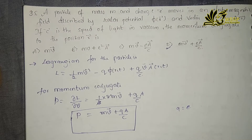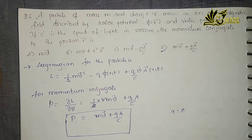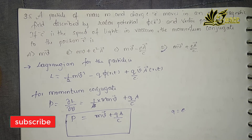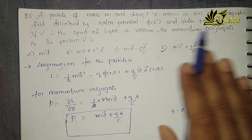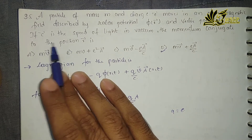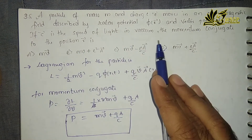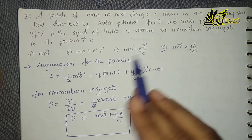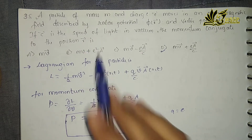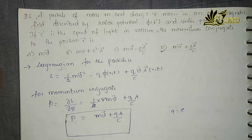Let's go for question number 35. A particle of mass M and charge q moves in an electromagnetic field described by scalar potential phi of r and the vector potential A, where c is the speed of light in the vacuum. The momentum conjugate to the position vector r is — here they have asked you to find out the conjugate momentum.